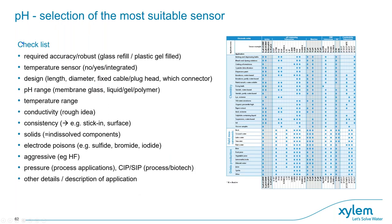When selecting an electrode, consider: the main requirement for accuracy — glass refillable or robust plastic; whether an integrated temperature sensor is needed; the connector and cable type. If you need to measure from pH 0 to pH 14 with the best possible accuracy, you need at least two electrodes — one standard type and one for the high alkaline range. If you are not happy with your current electrode, it is better to describe your application completely so the right recommendation can be made, rather than just asking for a similar replacement which may have the same limitations.